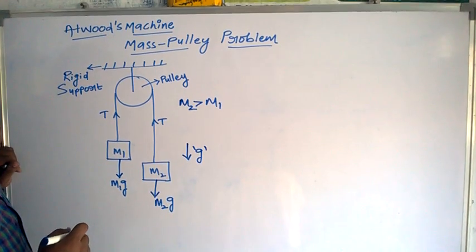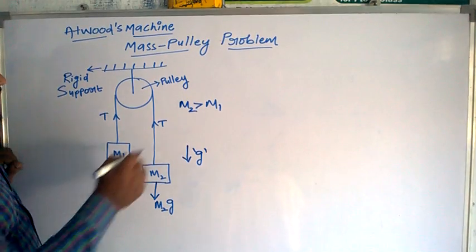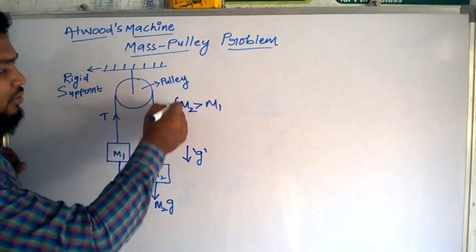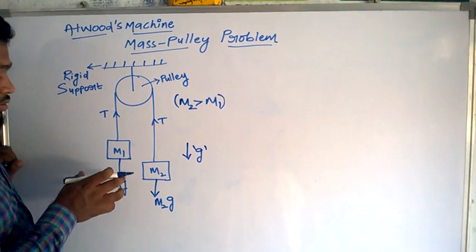To resolve this, I am going to write the forces acting on individual bodies. Since I have assumed m2 is greater than m1, then obviously this m2 is going to go down and this m1 is going to go up.